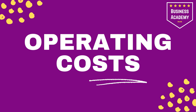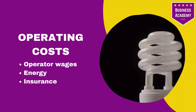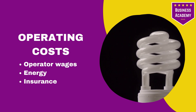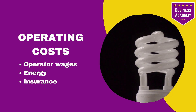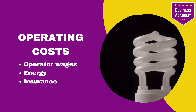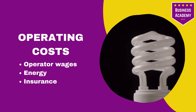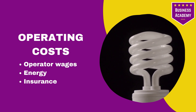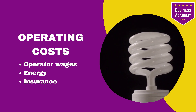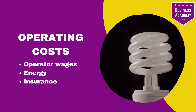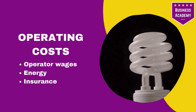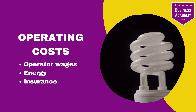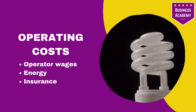Operating costs. There are a ton of different operating costs, but these are the major ones. Operator wages — these are the wages of the people operating the machine on the production line. The energy that the machine is using, whether that's electric, gas, and so on. And insurance to cover any damage to that machine and perhaps even damage to the workers from using that machine.